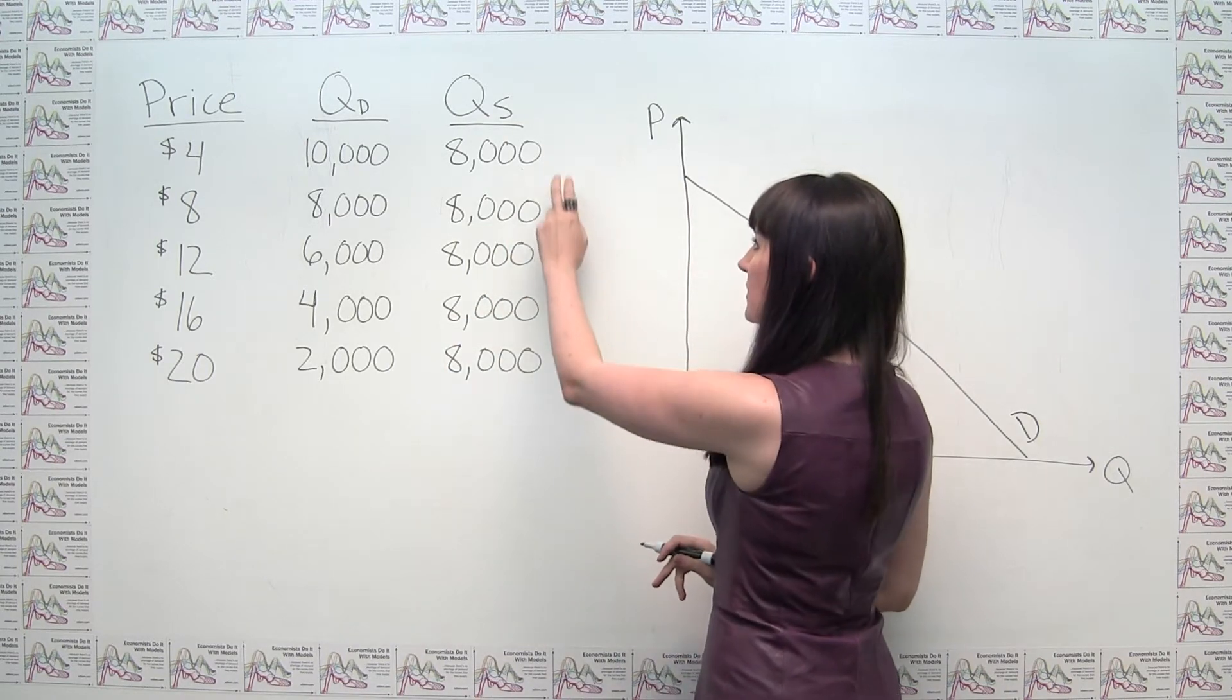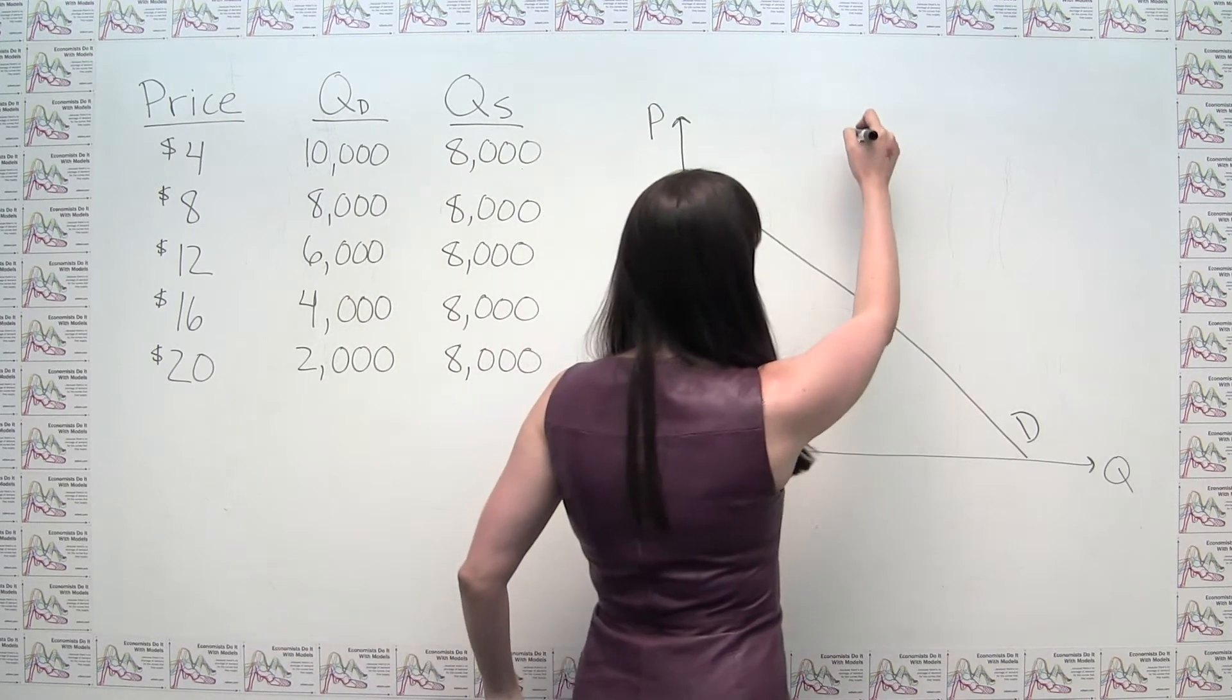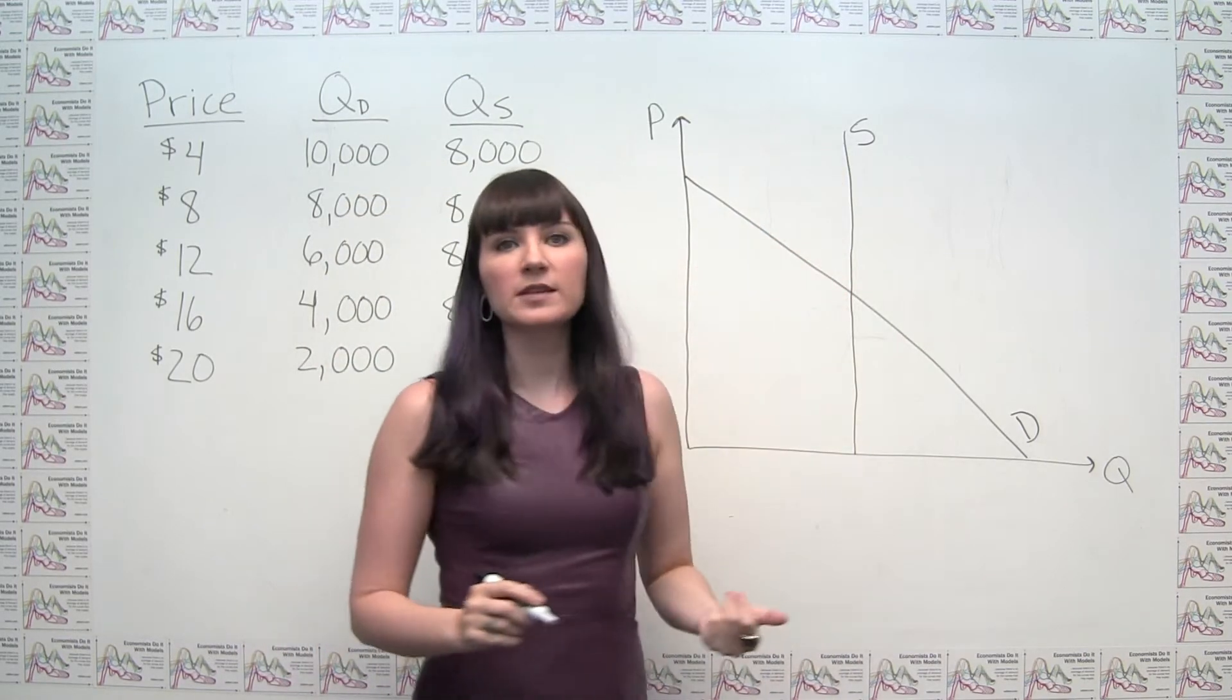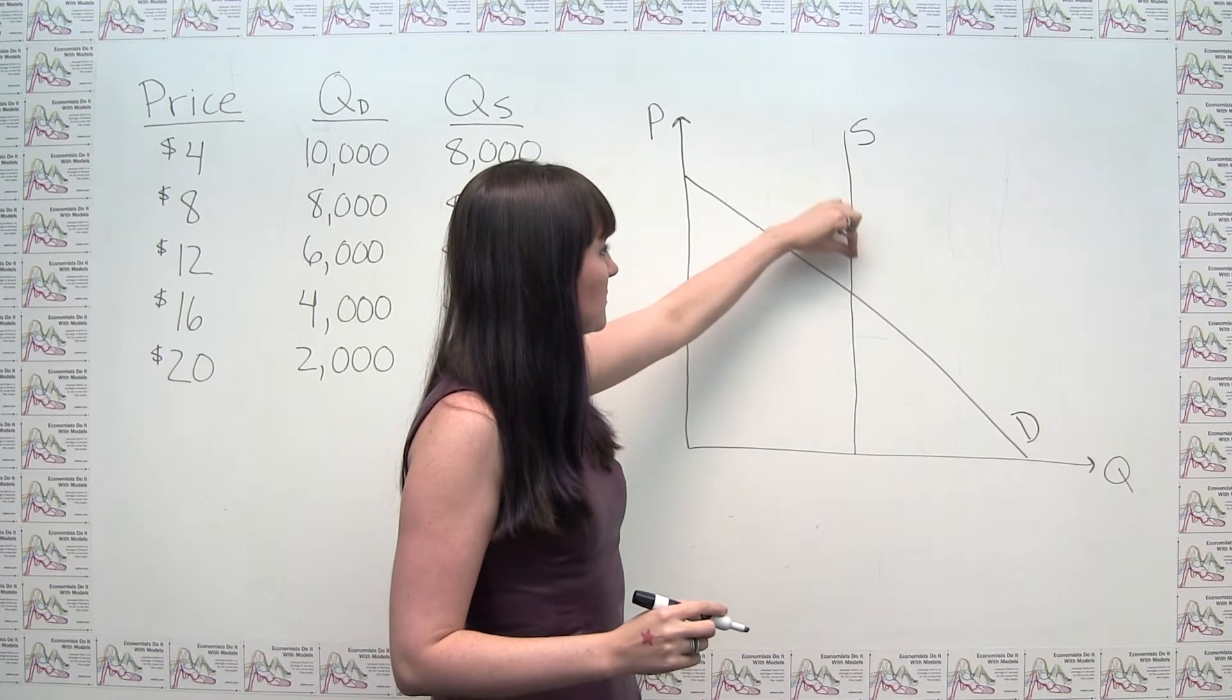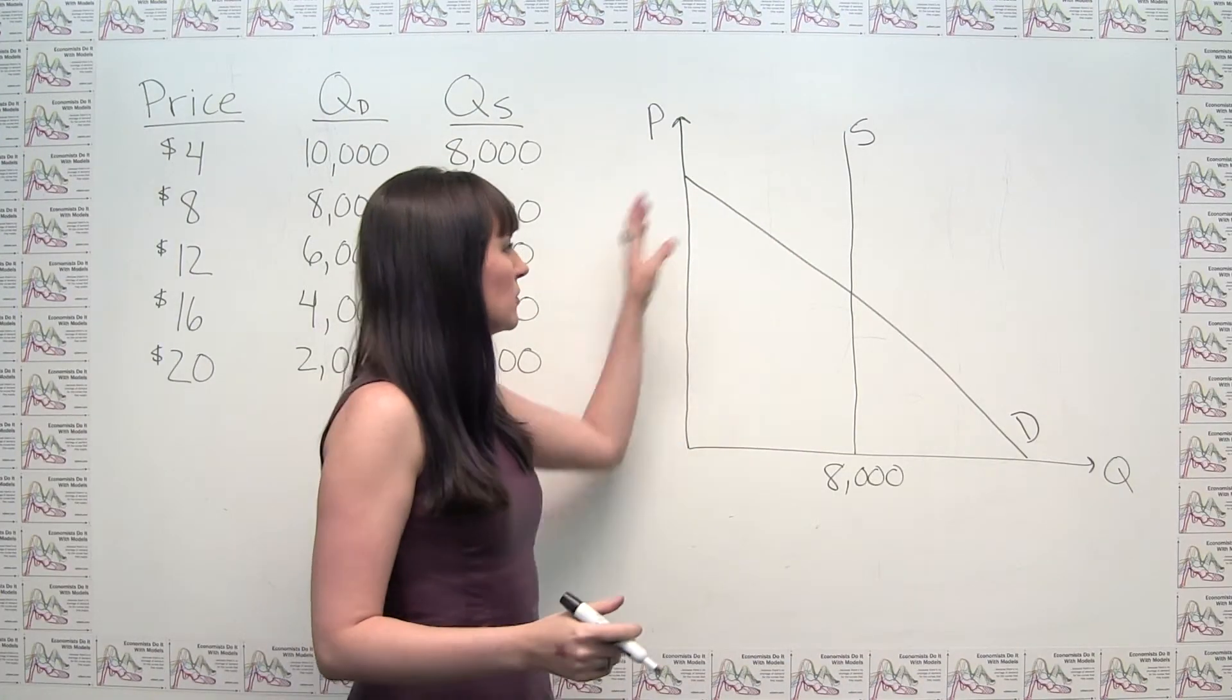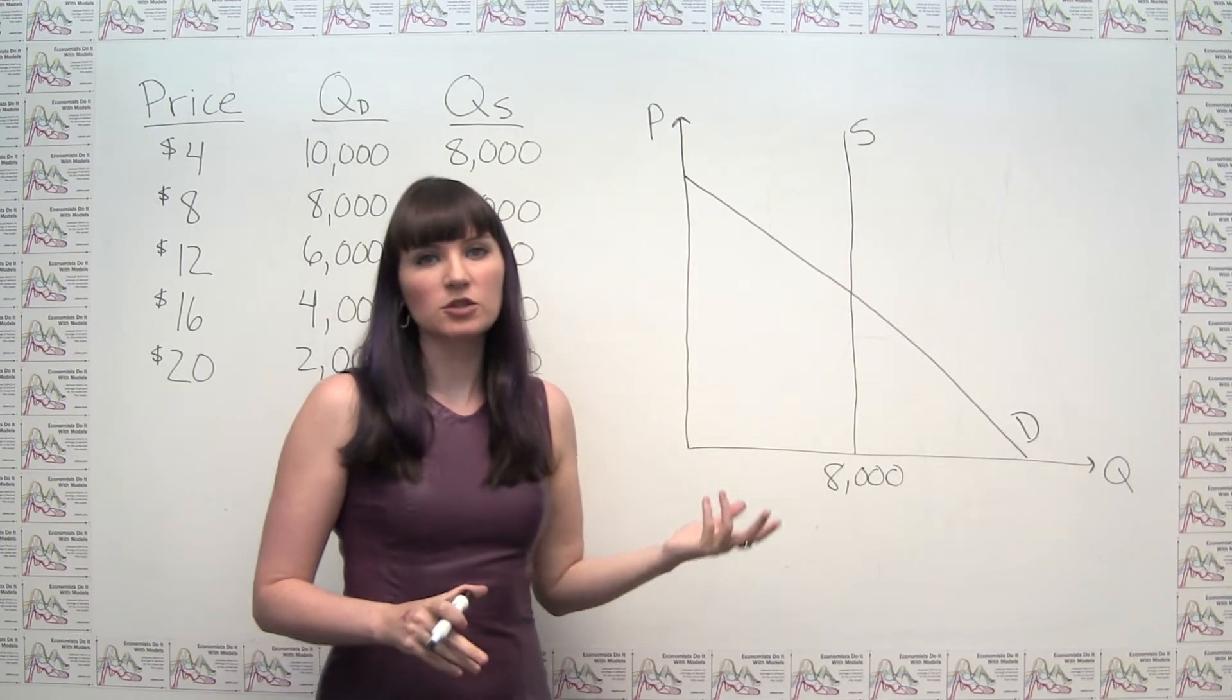But now let's think about the supply curve. So we look at the supply curve here, and we notice that the quantity supplied is always 8,000, regardless of what the price is. So we can actually draw that in a very specific way. What that means is that our supply curve, our quantity supplied does not respond to price. In economic terminology, that means that our supply is perfectly inelastic. So when that happens, because we're always going to be plotting points that are at 8,000 on the quantity axis, and just the various different points on the price axis, we're just going to end up with a vertical line.